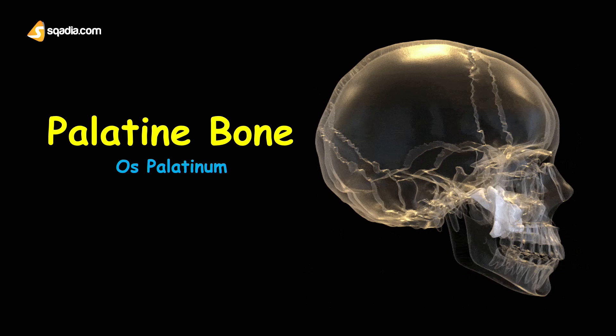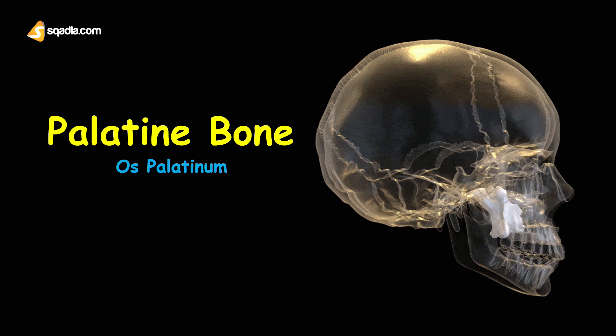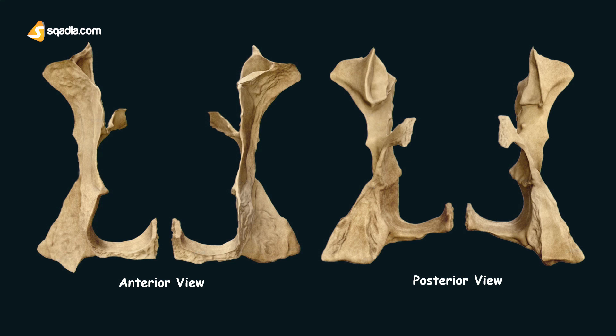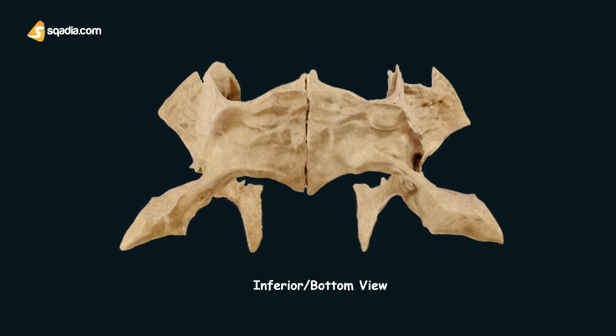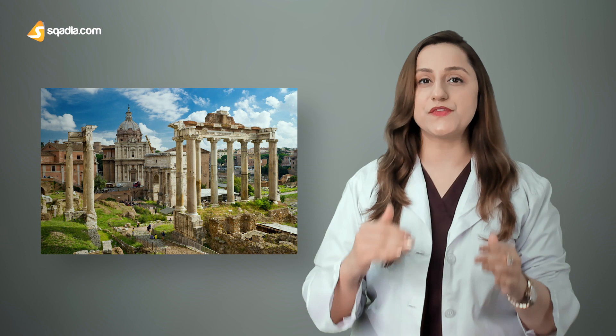Before proceeding ahead, let's have a review of all the views of the palatine bone — it will help you understand every aspect easily. Anterior and posterior are placed side by side for better understanding, then we have a bottom or inferior view, and lastly the lateral and medial views. As you can better understand, medial means towards the body and lateral means away from the body. The word palatine refers to the palatine hills in Rome, one of the seven important hills, because the curved appearance of the palate closely resembles the palatine hill.